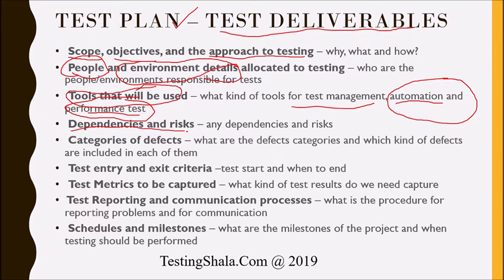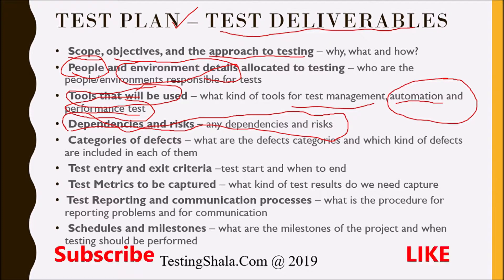Next are dependencies and risk. We have to clearly articulate what are the various dependencies for the testing of the current product and application, and how we are going to reduce those dependencies as much as possible. We also need to showcase the risks — we should have a proper thought process about the testing project and come up with a risk assessment, identifying the various risks that could come up when executing this testing project.